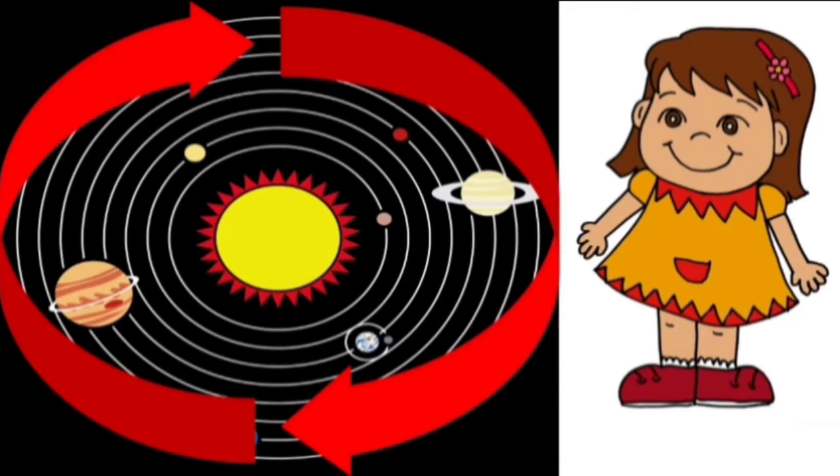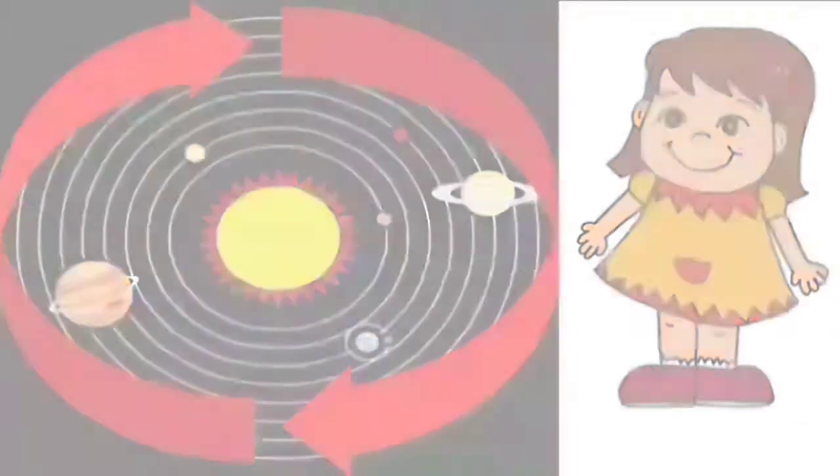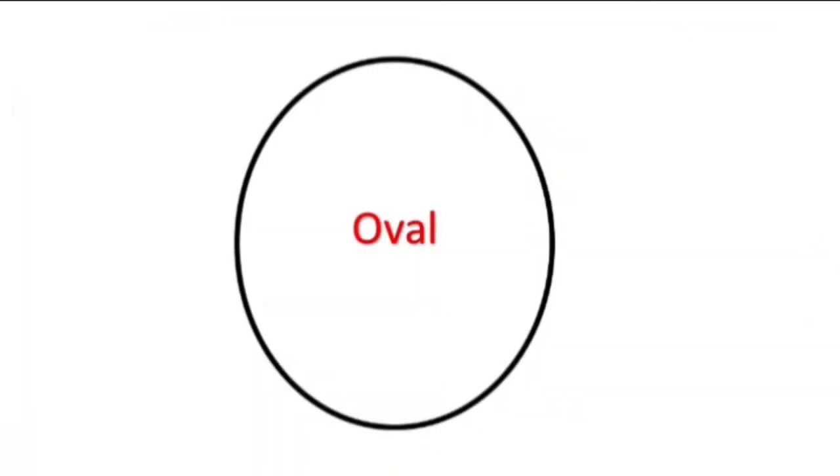All the planets in our solar system spin in circles around the Sun. The planets are shaped like an oval and they spin continuously.